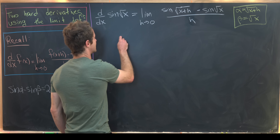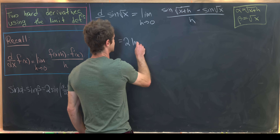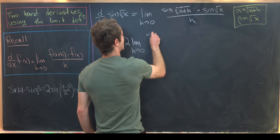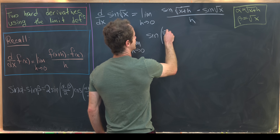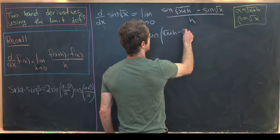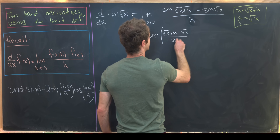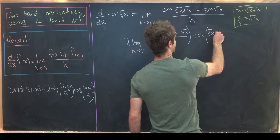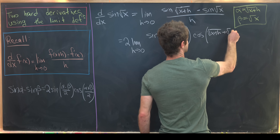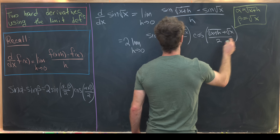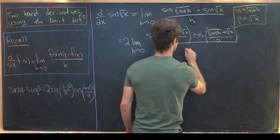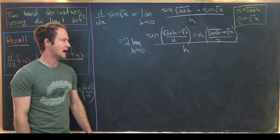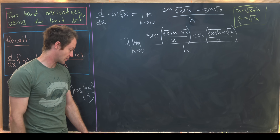Applying the identity gives us two times the limit as h goes to zero of sine((√(x+h) − √x)/2) times cosine((√(x+h) + √x)/2), all over h. I was able to factor the two out because the limit is a linear operation.